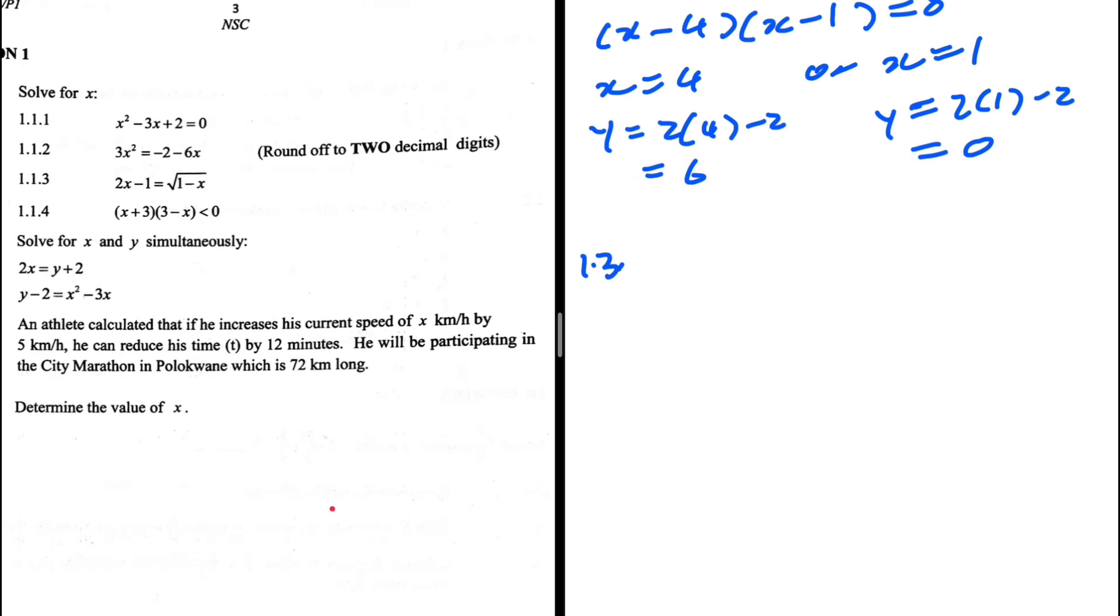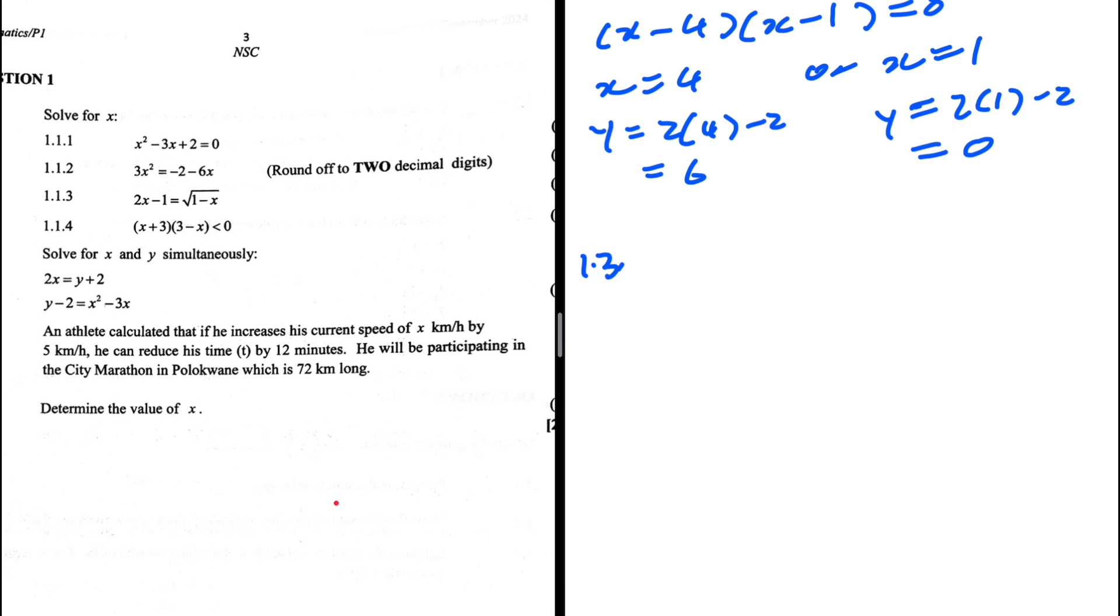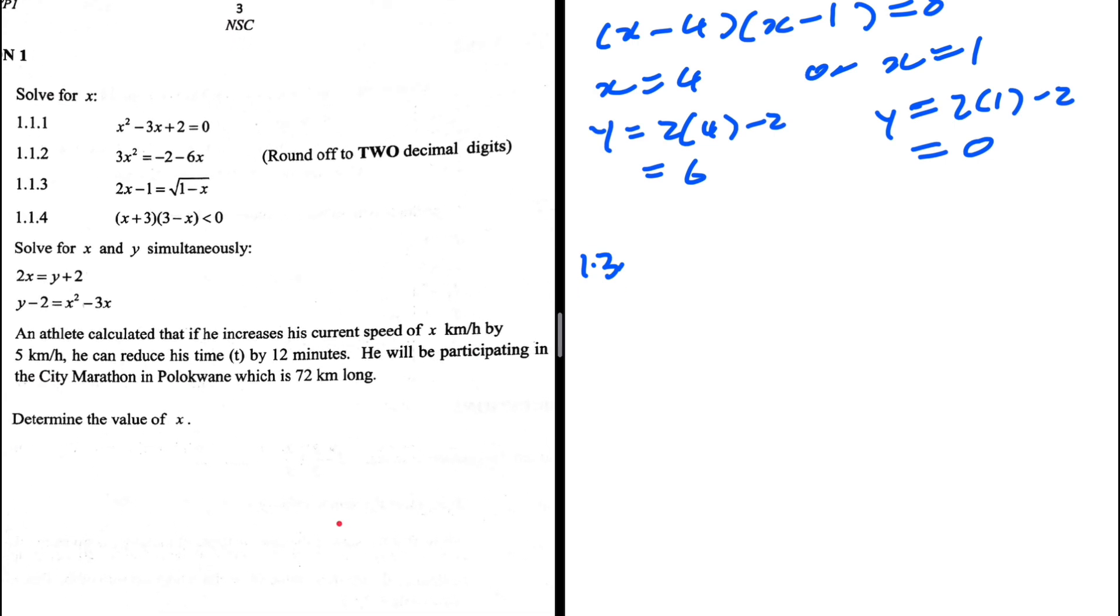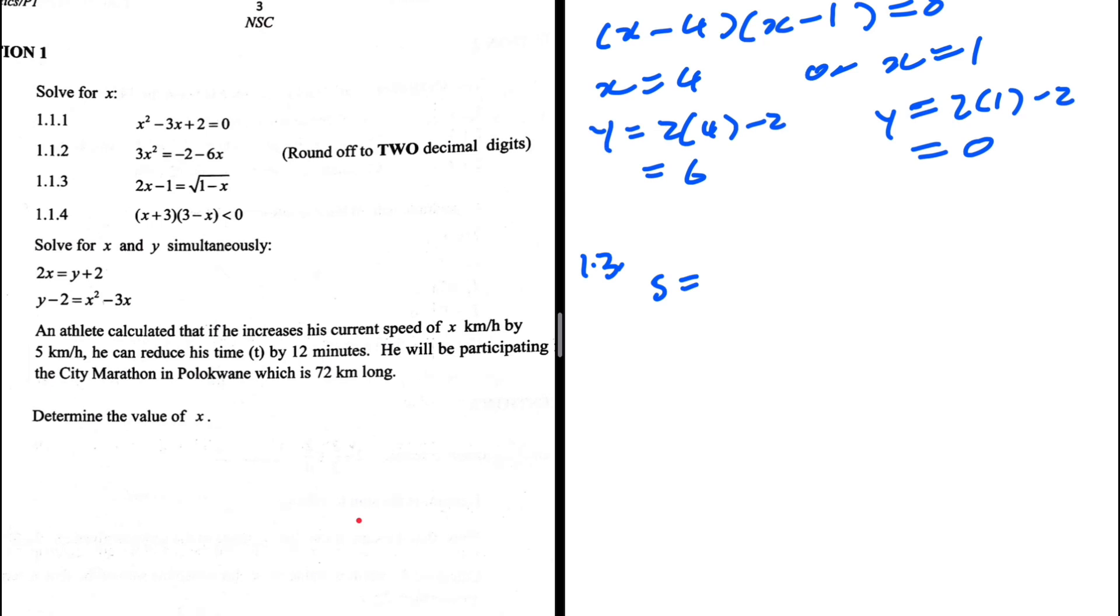So we have some words here and somehow we need to put this into equations and solve the problem. 1.3, the last question, equation one, it's always a bit challenging, right? But let's take a look and see what is happening. So his speed initially is x.